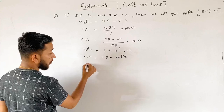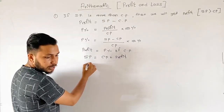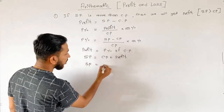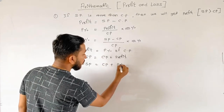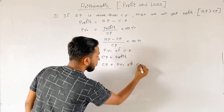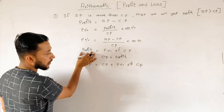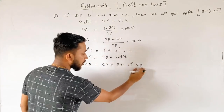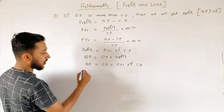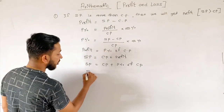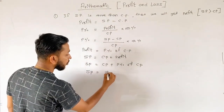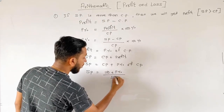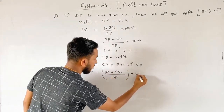The formula is SP equals CP plus profit percentage of CP. Therefore, SP equals 100 plus profit percentage by 100, times CP.